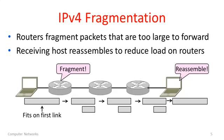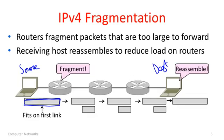Let's look at how fragmentation works. This picture shows a source on the left and a destination on the right. Fragmentation happens at routers inside the network. The source sends a big packet — the biggest packet which would fit on its first link. When we get to some router, if that packet is too large to fit on the outgoing link, then the router will fragment it, which is exactly what happens at the first router.